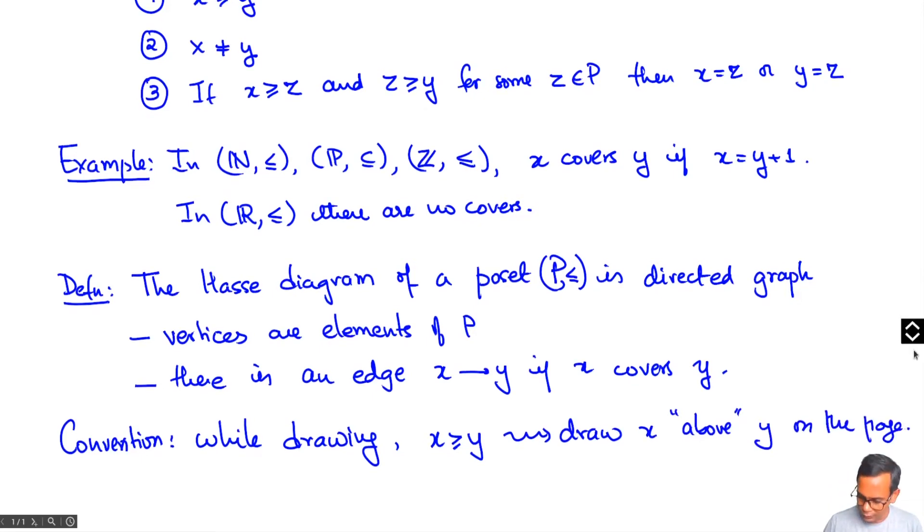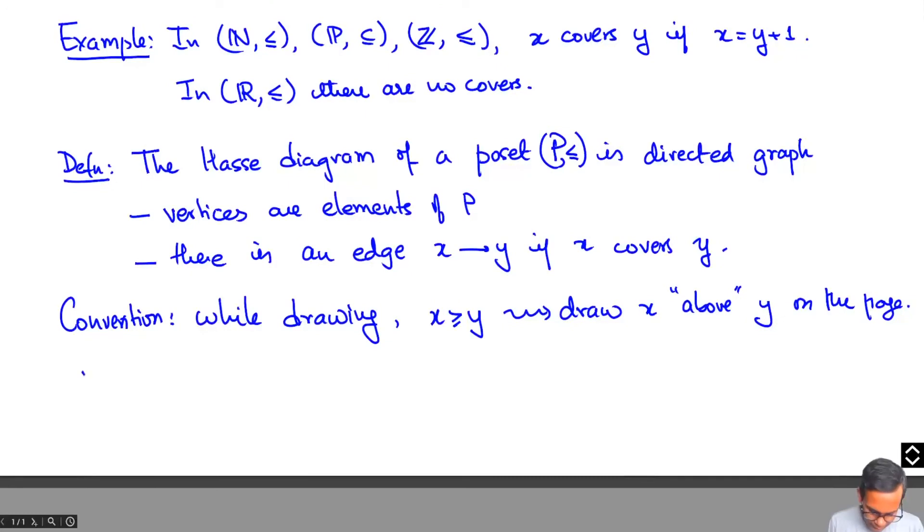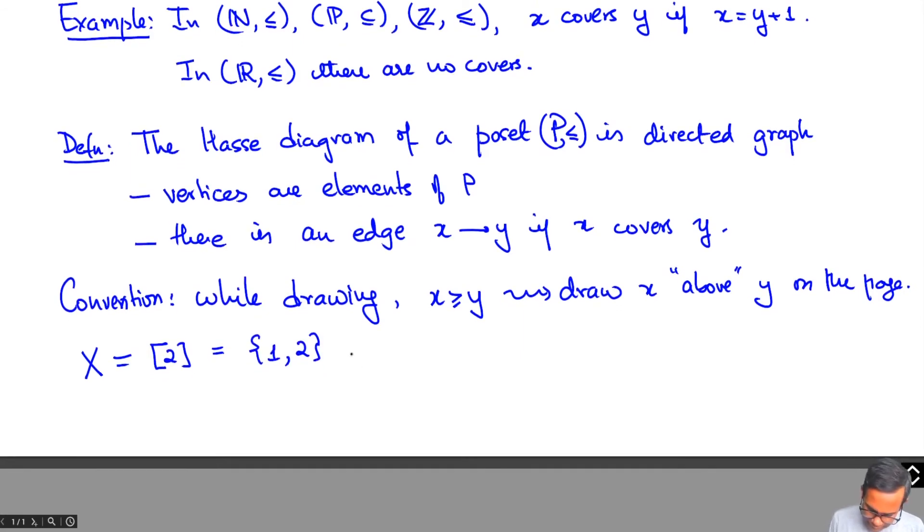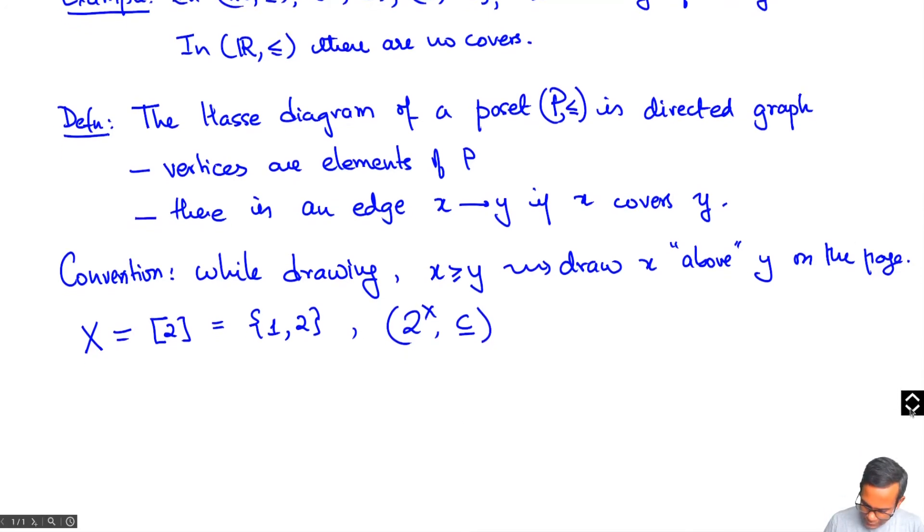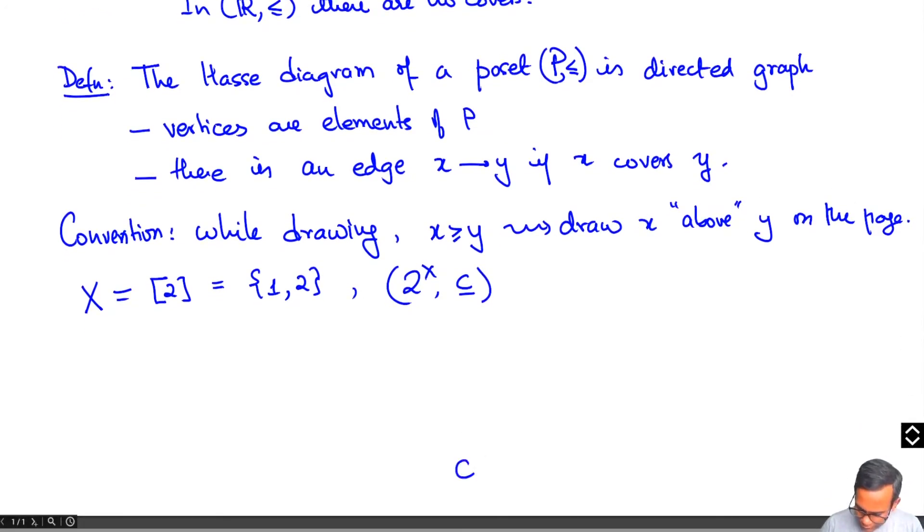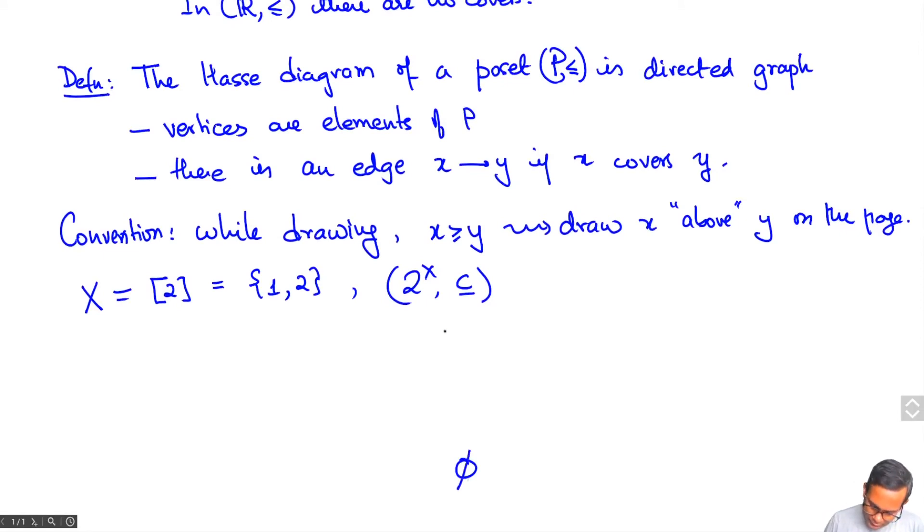Let me illustrate this by actually drawing one for you. Let's take x to be the set {1, 2}. This is the set of just two integers, 1 and 2, and let's take 2 to the x with containment. This partially ordered set has four elements, the smallest of which is just the empty set. I'll draw that here at the bottom of the page.